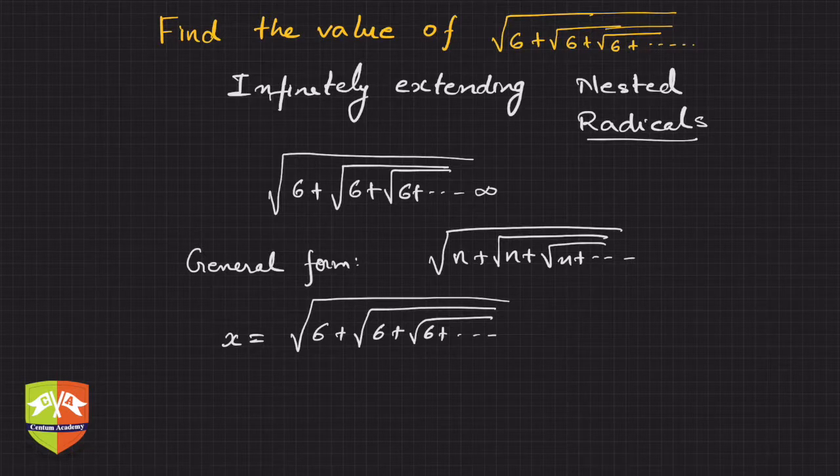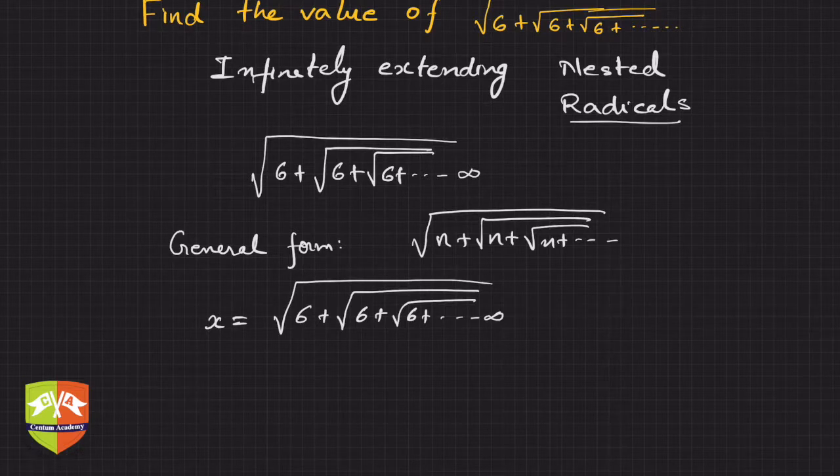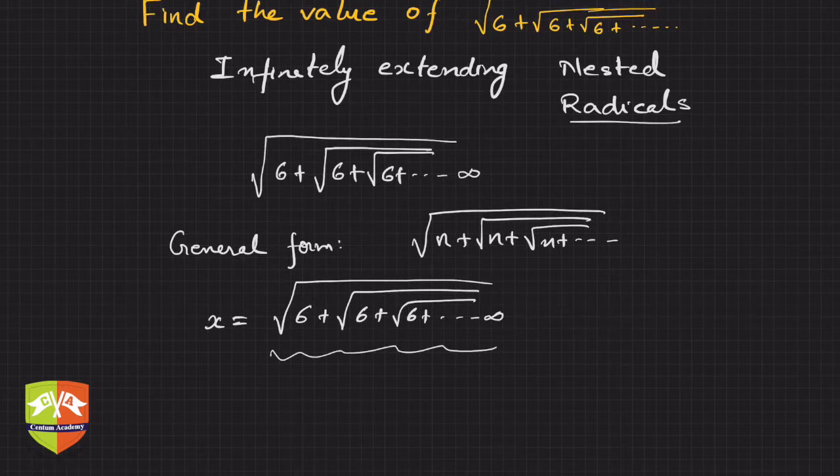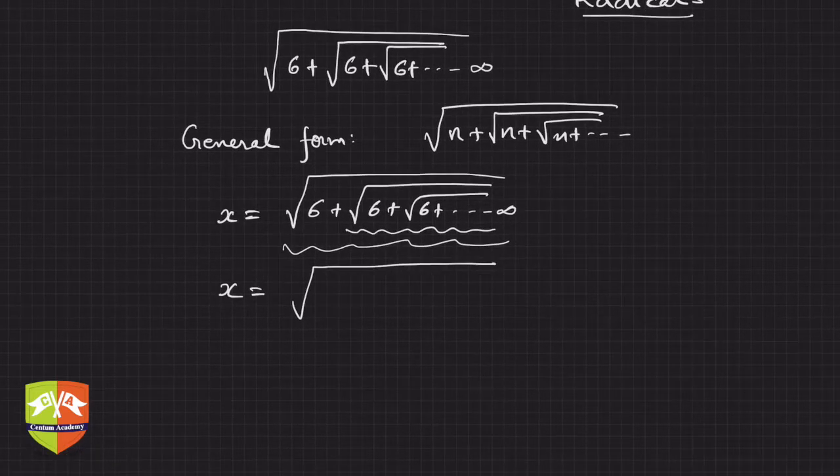Okay, now the best part of a nested variable is because it's extending till infinity, so the value of the entire nested radical and the value within it, these two, right? So hence if you call it x, you can expect or you can rewrite it as 6 plus x itself.